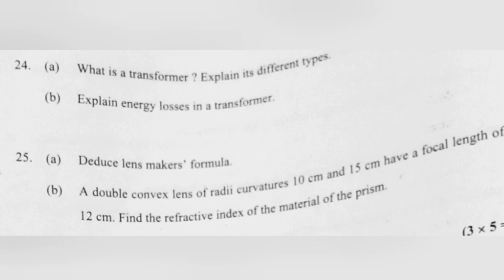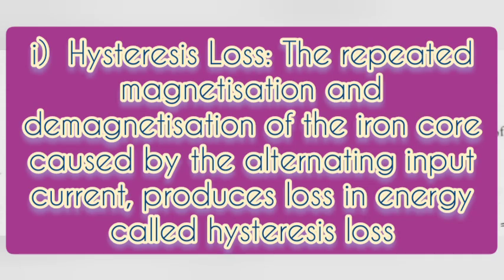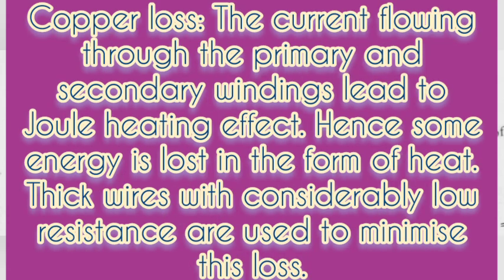Energy losses in a transformer: (1) Hysteresis loss — the repeated magnetization and demagnetization of the iron core caused by the alternating input current produces loss in energy called hysteresis loss. (2) Copper loss — the current flowing through the primary and secondary windings leads to Joule heating; some energy is lost as heat. Thick wires with considerably low resistance are used to minimize this loss.